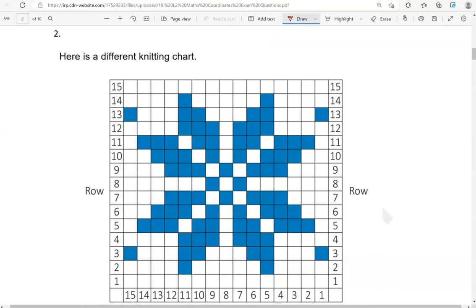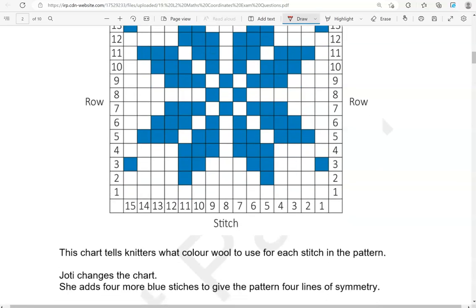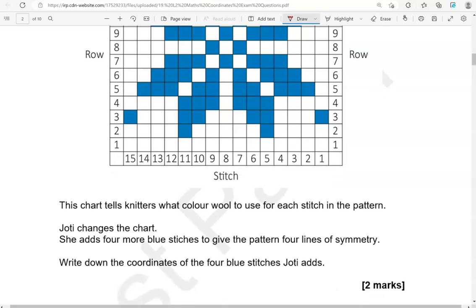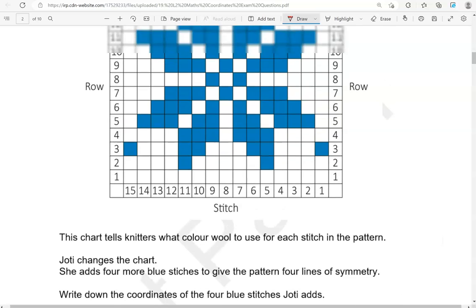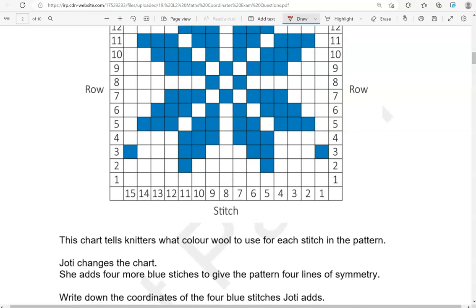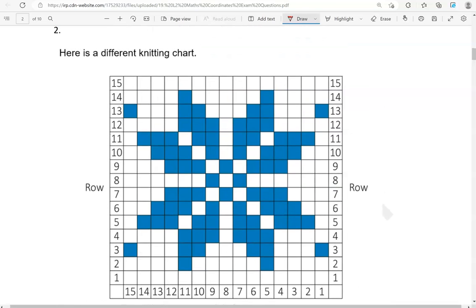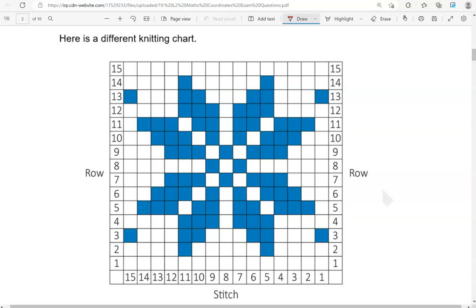Here is a different knitting chart. This chart tells knitters what colour wool to use for each stitch in the pattern. Jotty changes the chart. She adds four more blue stitches to give the pattern four lines of symmetry. Write down the coordinates of the four blue stitches Jotty adds. So, we'll give the pattern four lines of symmetry.